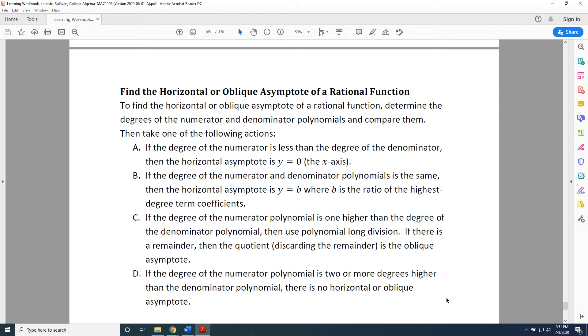The topic of this video is finding the horizontal or oblique asymptotes of a rational function. To find the horizontal or oblique asymptote of a rational function, determine the degrees of the numerator and denominator polynomials and compare them. Then, take one of the following actions.